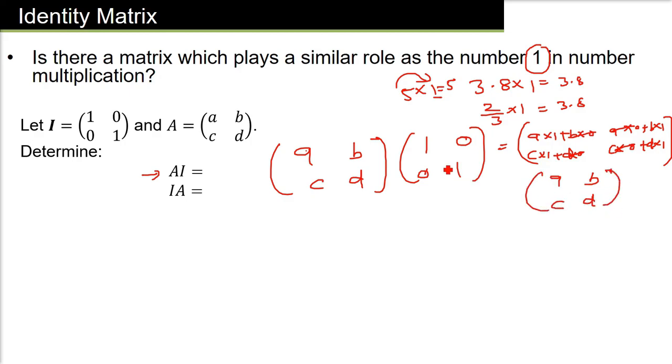This is the same matrix, A matrix. So the value which is being multiplied with this A matrix, so that that A matrix come back is the identity matrix.